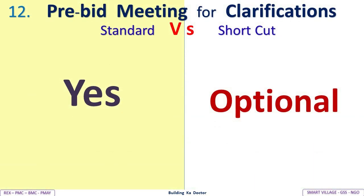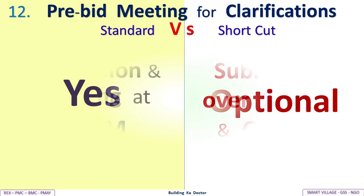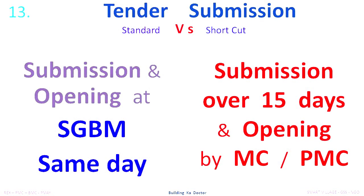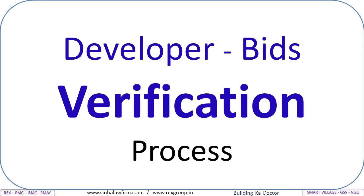Pre-bid meeting for clarifications: Standard includes one; shortcut makes it optional. Tender submission and opening: Under the standard method, submission and opening happen at the SGBM on the same day. Under the shortcut, submission occurs over 15 days and opening is handled by the MC or PMC, not transparently at a general body meeting.